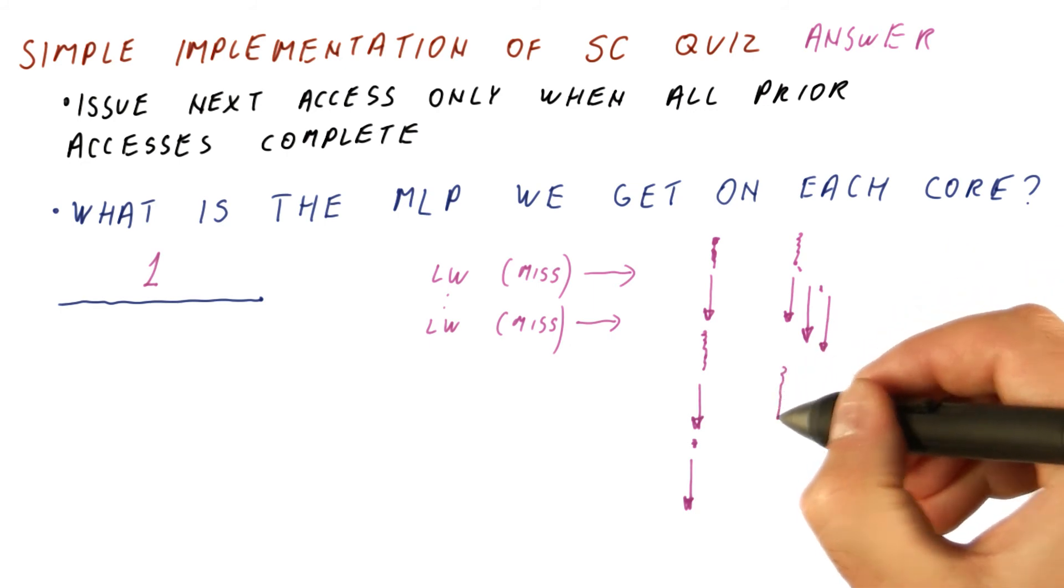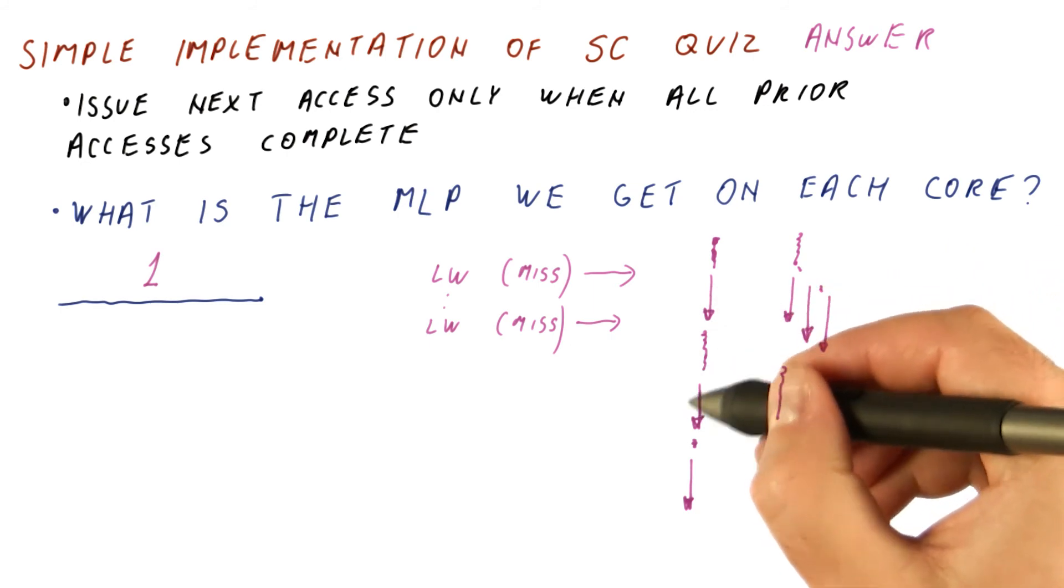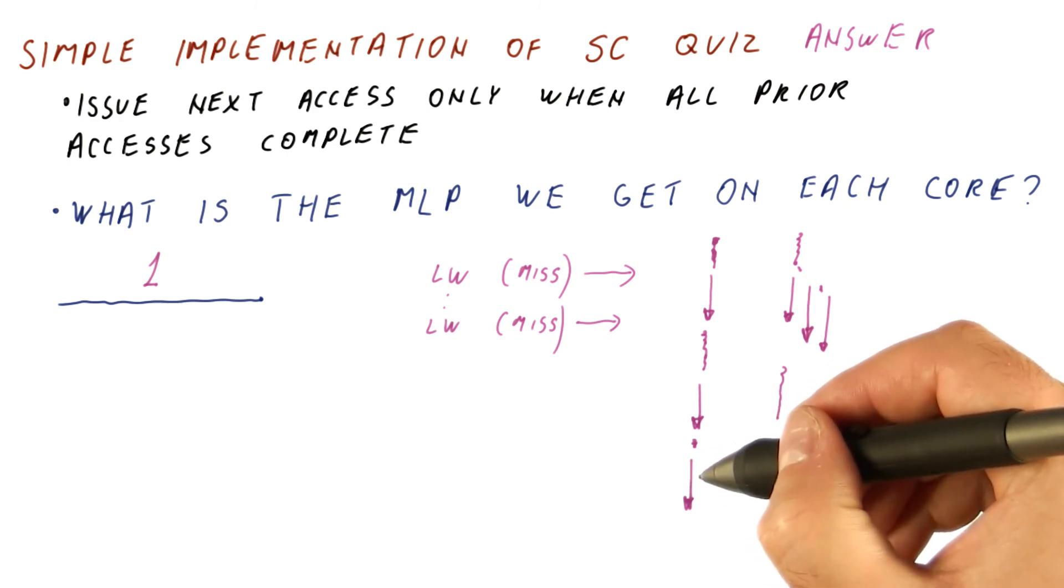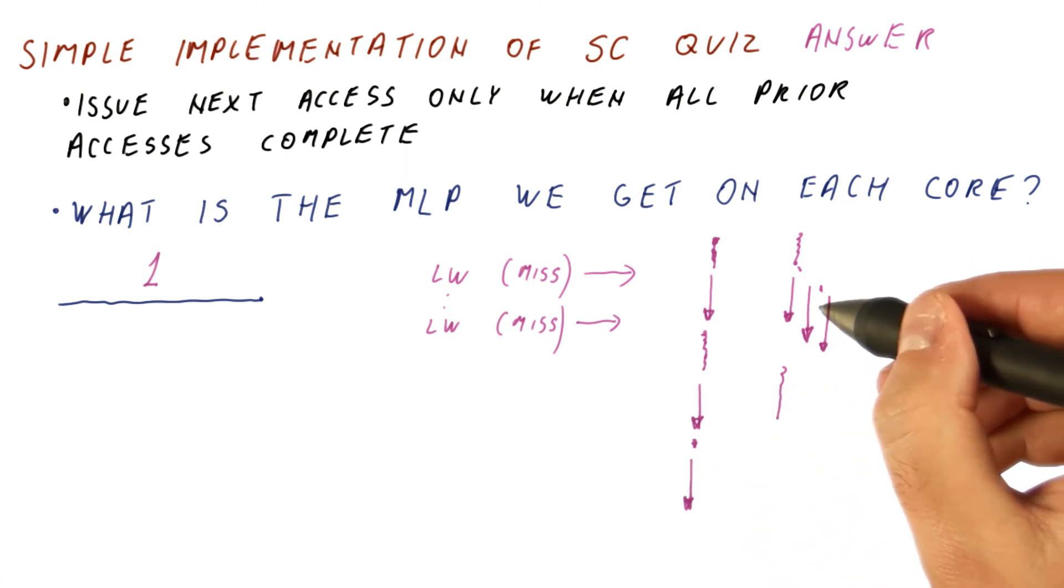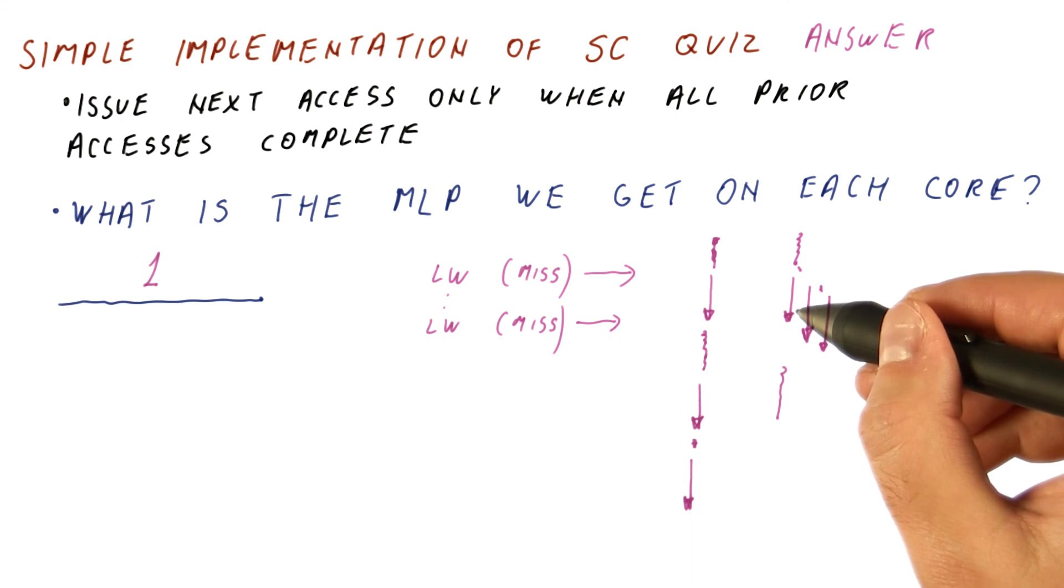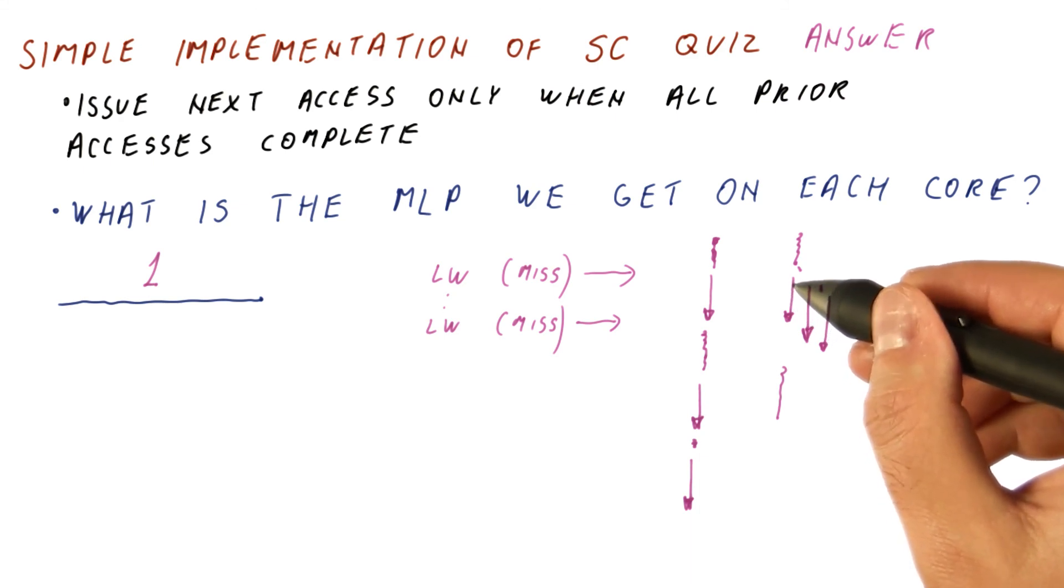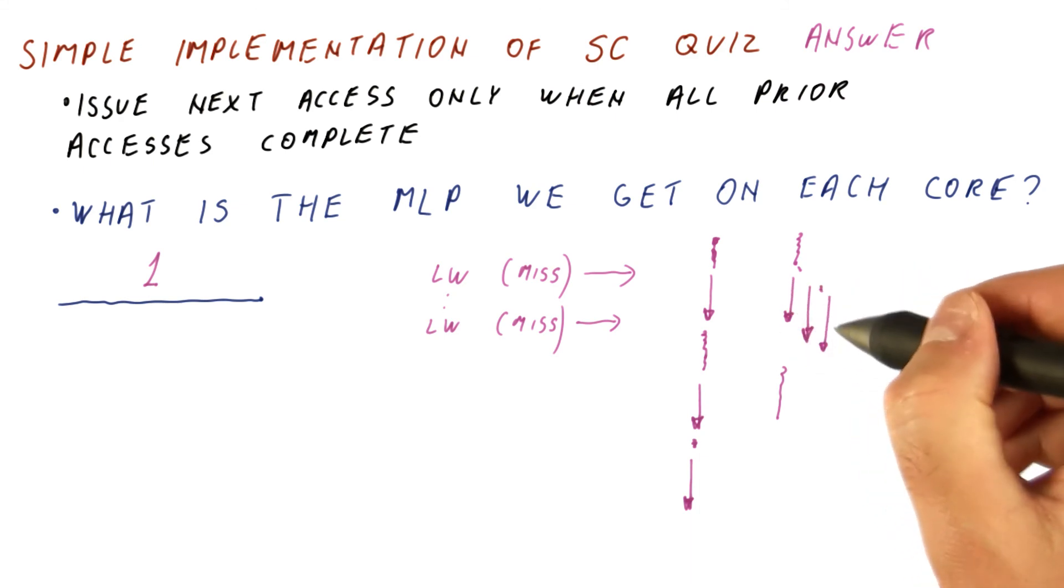So in this case, we have that the cost of each miss in terms of memory access was not paid every time. We paid really the cost of maybe something like one and a half misses total, but we satisfied three misses here.